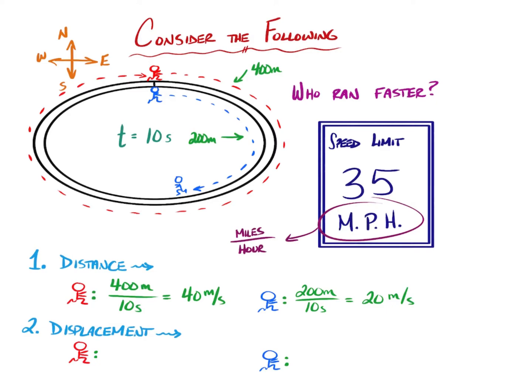Well, based on that, if we want to use the same idea, miles per hour, meaning some kind of length divided by time, the red runner ran 400 meters of distance over 10 seconds. So they were running at 40 meters per second.